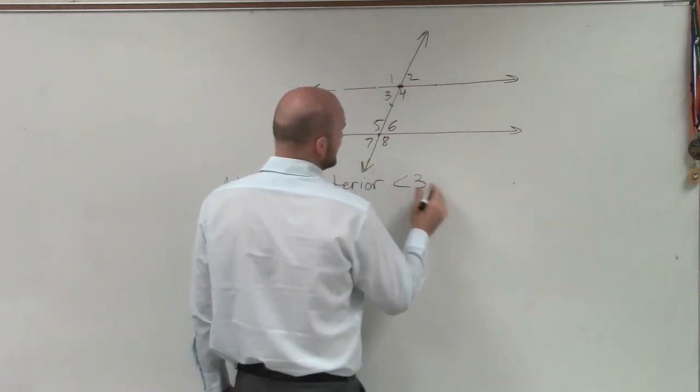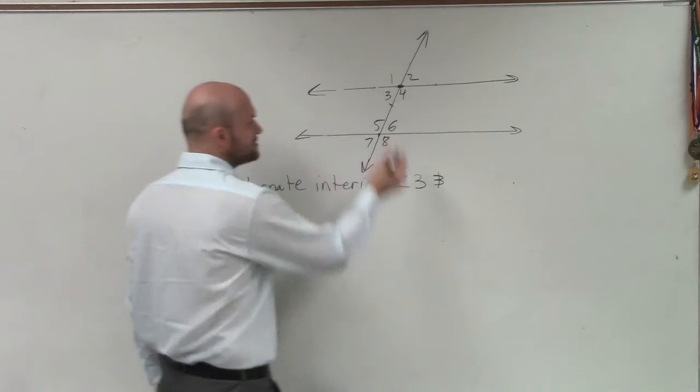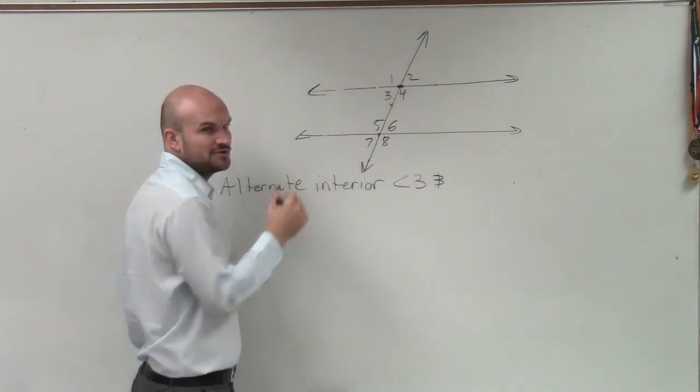All right, so we have angle 3, and Jordan, what would you say is alternate interior to angle 3? What would you guess?